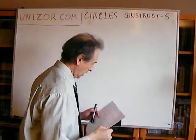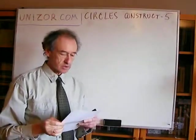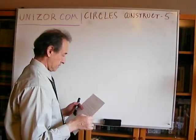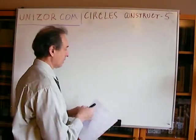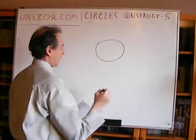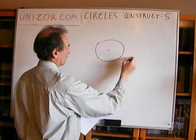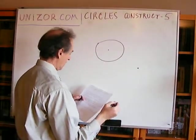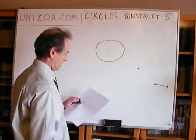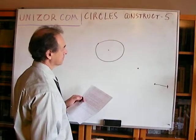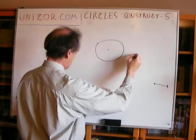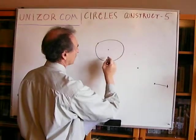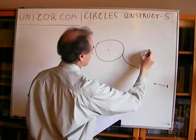Next: construct a circle of a given radius that contains a given point that lies inside a circle, or on a circle, or outside a circle. We have a given circle, a given point which can be outside, on, or inside the circle, and a given radius. Let's talk about the outside case first.